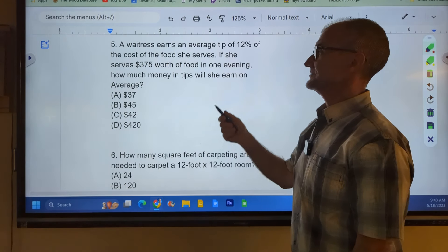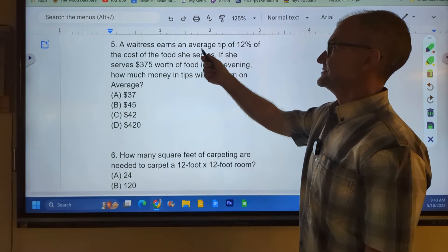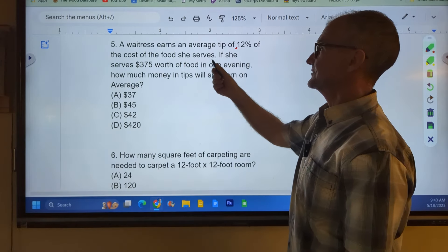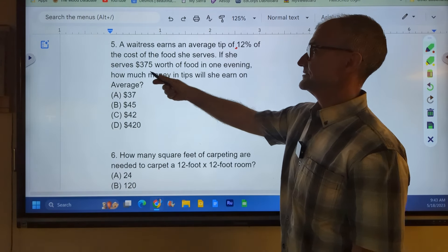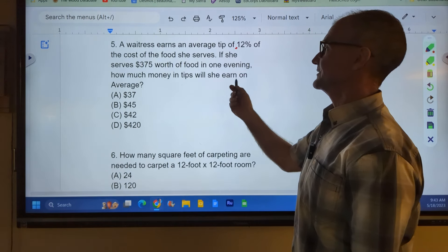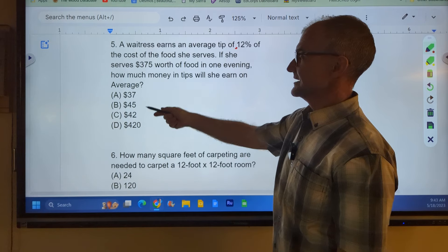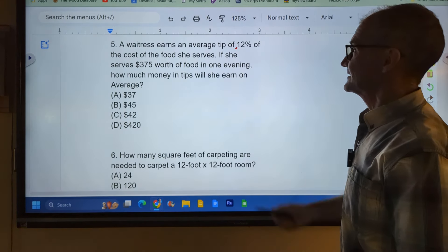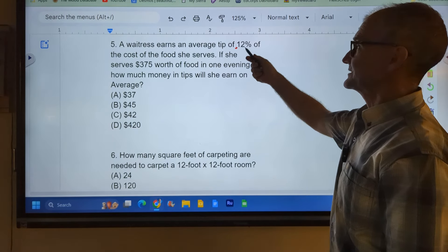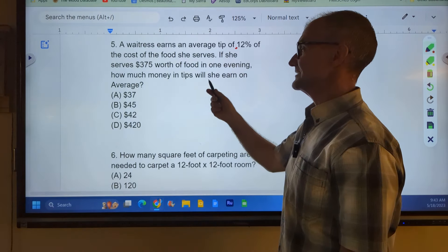Number five, again, pause the video, do the problem, and then watch how I do it. A waitress earns an average of 12%, so that's going to be 0.12, of the cost of the food she serves. If she serves $375 worth of food in one evening, how much money in tips can she earn? I'm going to skip down and just look at these values right here. Twelve percent is 0.12. It's about 10%, but it's a little bit more than ten percent.